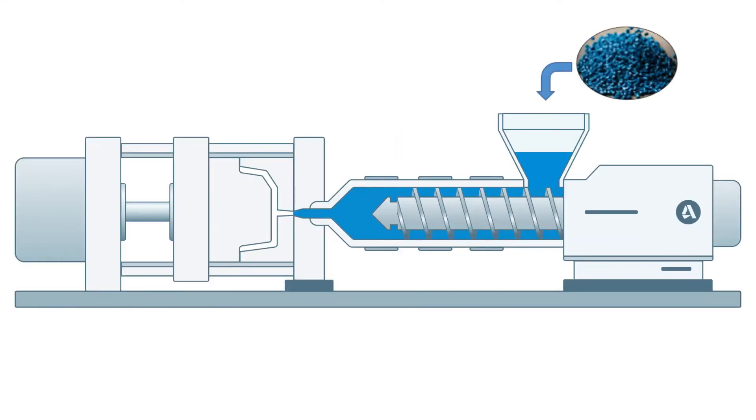Plastic pellets are fed into the hopper attached to the injection unit. From the hopper, they move into the barrel where they are melted by the reciprocating screw.